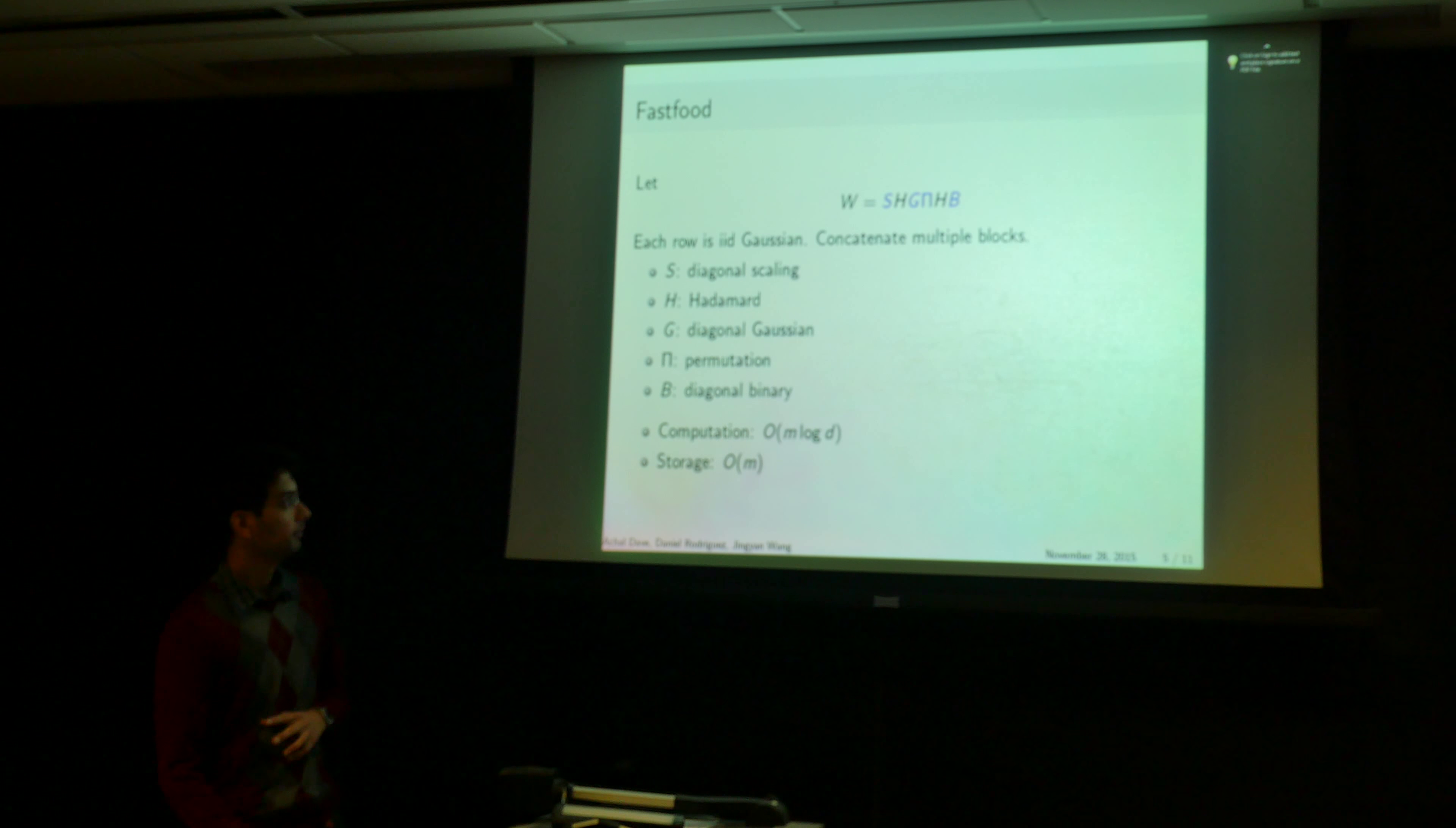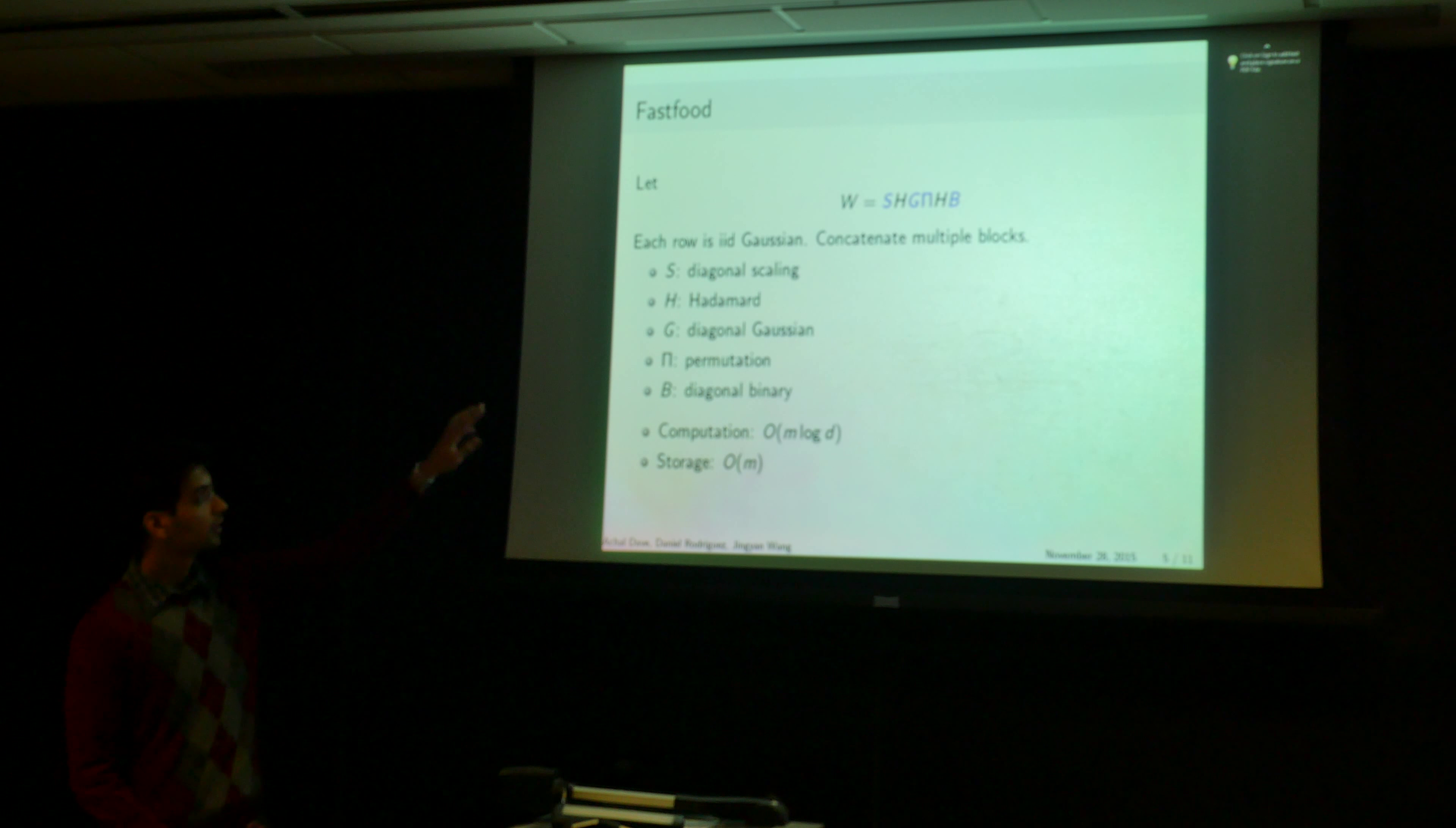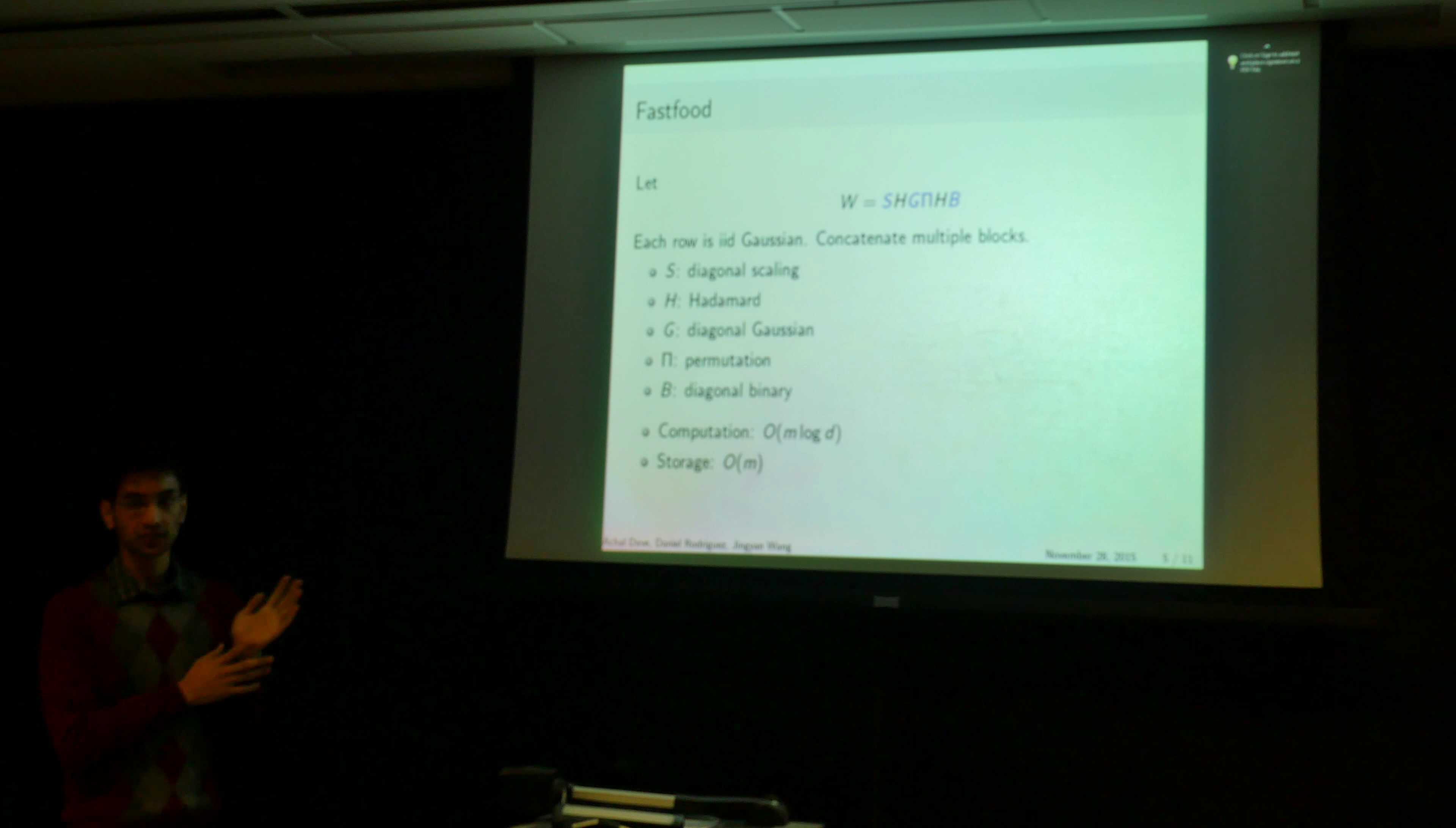So in particular, the matrix that fast food uses instead of this Gaussian random matrix is a product of a number of matrices. And the key thing here is that the random matrices are S, G, pi, and B. S is a random scaling matrix. G is a diagonal Gaussian matrix. So now you only have Gaussians on the diagonal rather than in every element. You have a random permutation matrix. And you have a diagonal binary matrix, which is plus or minus 1 on the diagonals.